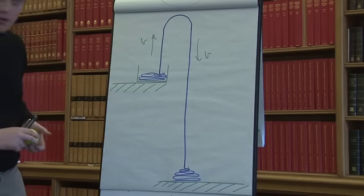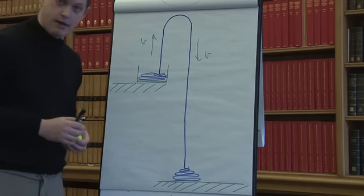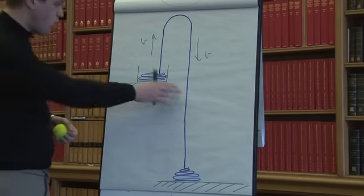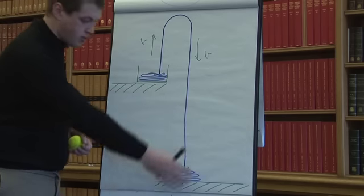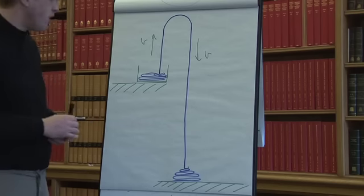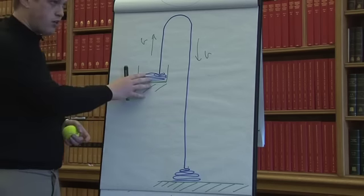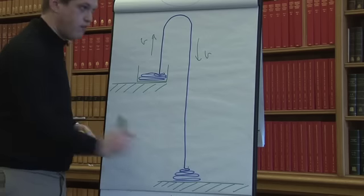The first question which people on the internet have theorized about, I think very correctly, is what causes the chain to flow from the pot to the floor? And that's really down to gravity. The floor is lower than the pot, so it is releasing gravitational energy as it falls down.